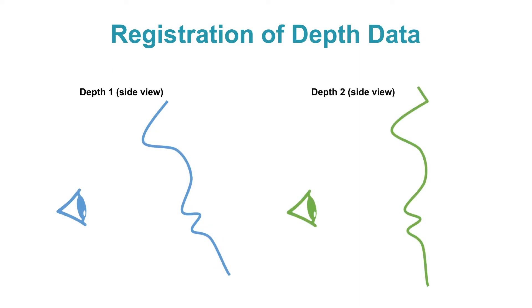The basic part of the algorithm is registration of two consecutive depth frames to find the relative camera movement.